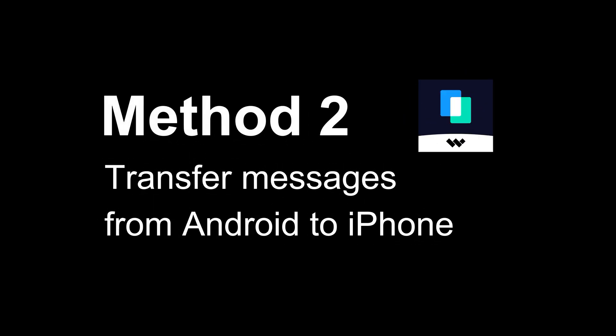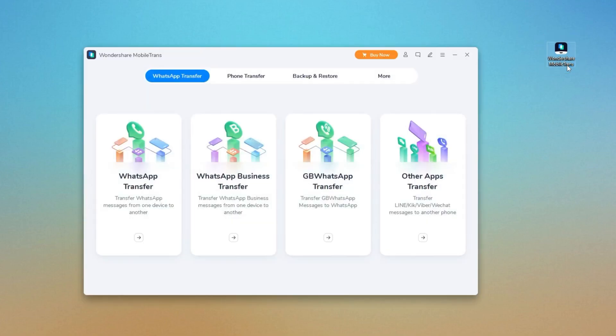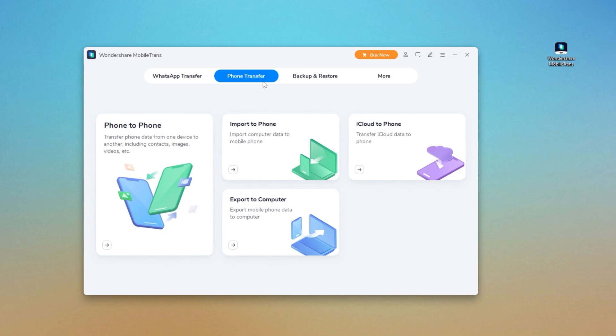The second method is to use a third-party tool, Phone Transfer. It won't erase anything on your iPhone, and can make the data transfer in just one click. Step 1: Install and open Phone Transfer on your computer. You can simply click the Download link below this video. Open it, click Phone Transfer, choose Phone to Phone Mode.